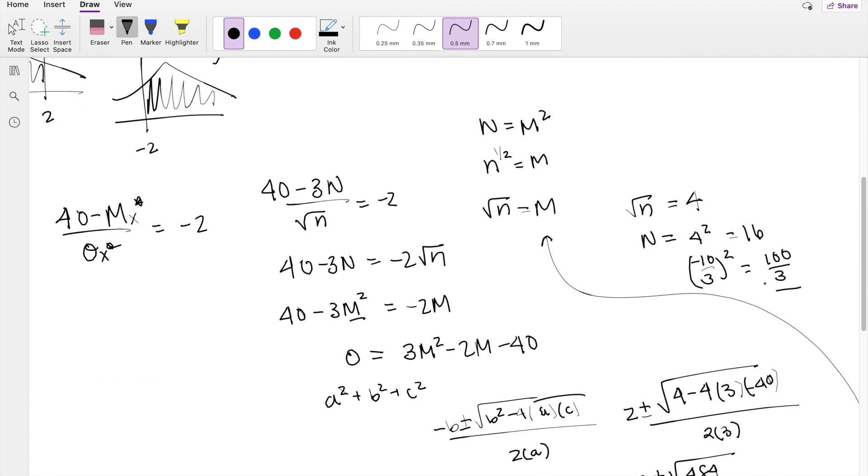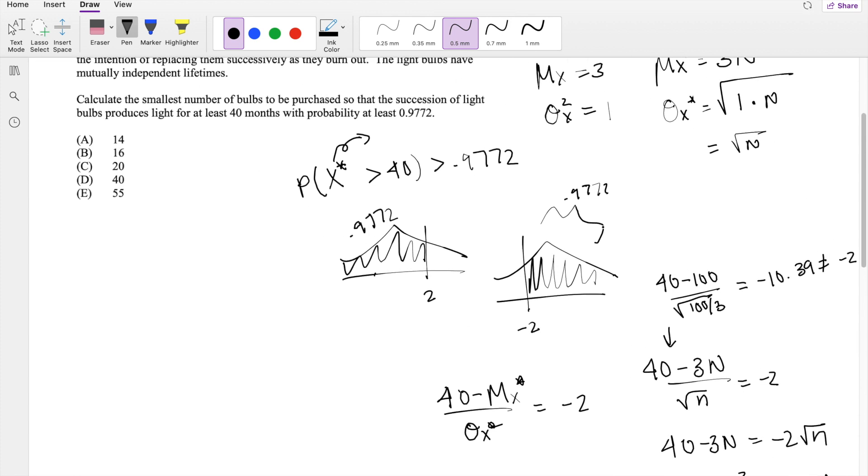So if I do plug this n in for this formula right here, you get 40 minus 100 divided by root 100 over 3, which is equal to negative 10.39, which does not equal negative 2. So then we know that we can reject this answer, so our n must be equal to 16, which is our answer B.